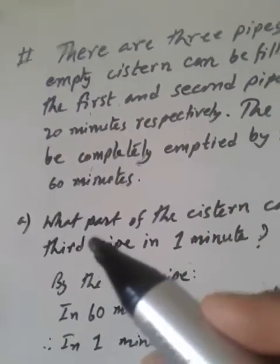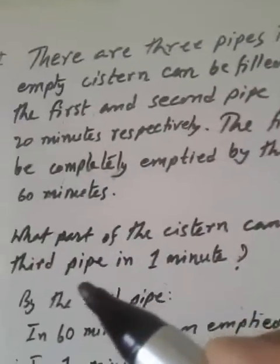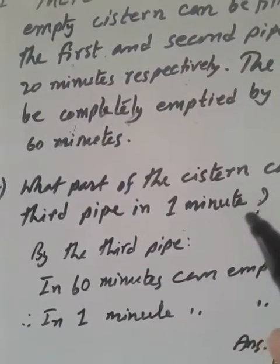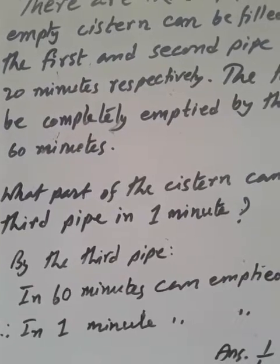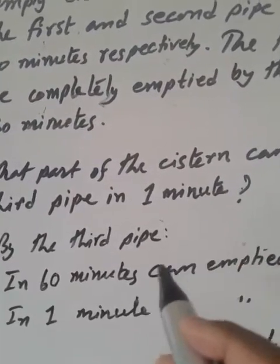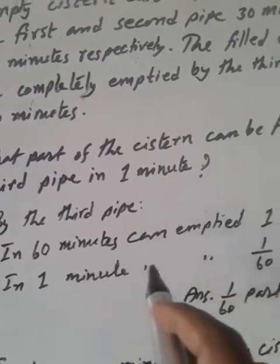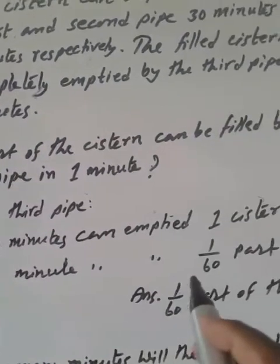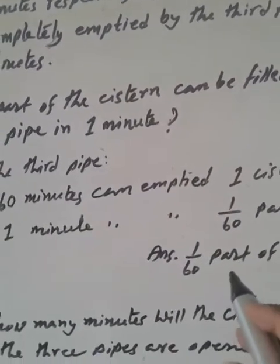The question is: what part of the cistern can be filled by the third pipe in one minute? By the third pipe, to empty the cistern takes 60 minutes. In 60 minutes it can empty one cistern. Therefore, in one minute it can empty 1/60 part of the cistern.